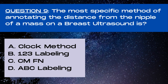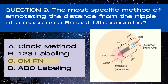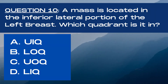Question 9. The most specific method of annotating the distance from the nipple of a mass on a breast ultrasound is: A clock method, B 1-2-3 labeling, C centimeters from nipple, or D ABC labeling? The answer is C, centimeters from nipple. Centimeters from nipple is the most accurate method we have of measuring distance from the nipple. It's also very reproducible between breast centers, which makes follow-ups more standardized. It has largely replaced the 1-2-3 labeling method, which has less accuracy.